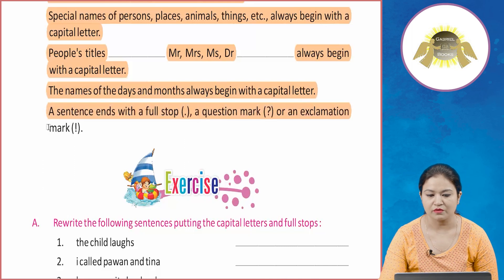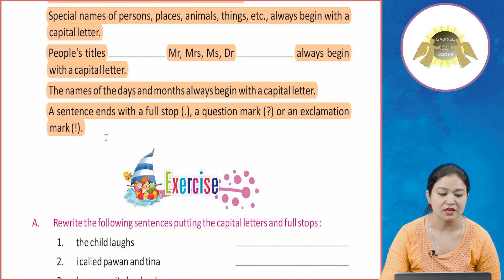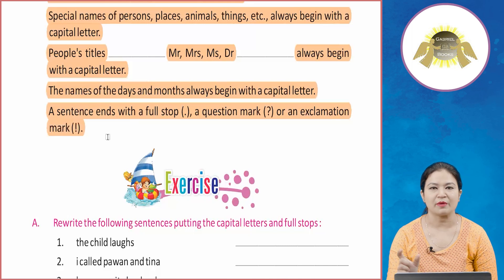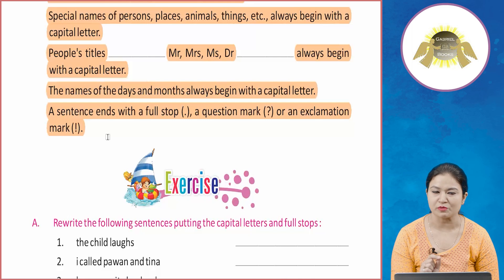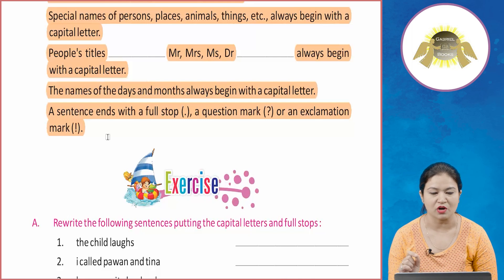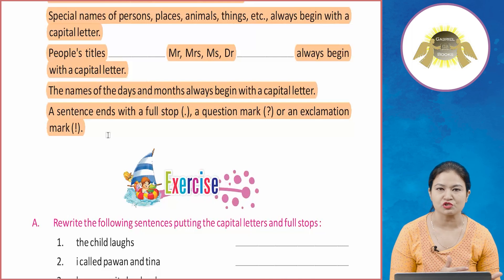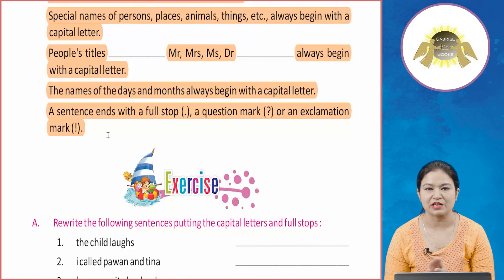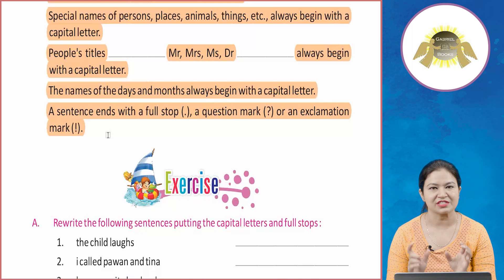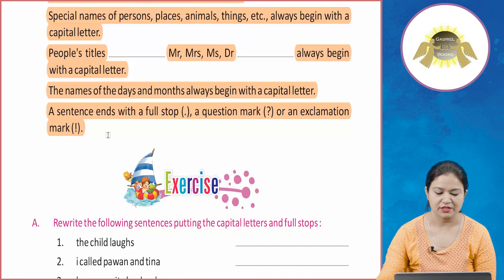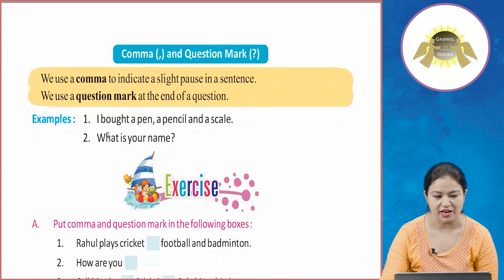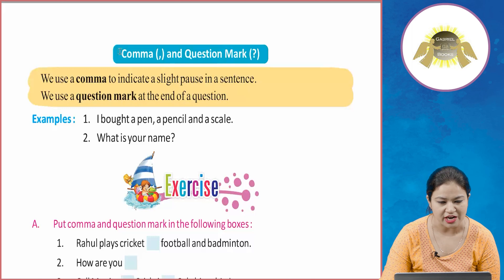A sentence ends with a full stop, a question mark, or an exclamation mark. If a sentence is a statement, it ends with a full stop. If it is asking a question, it ends with a question mark. If the sentence shows some emotion, we use an exclamation mark at the end.